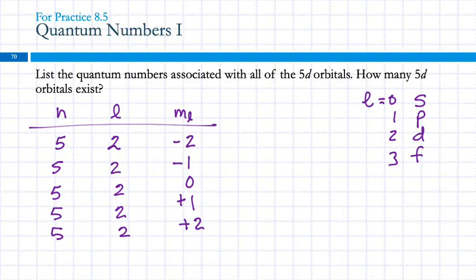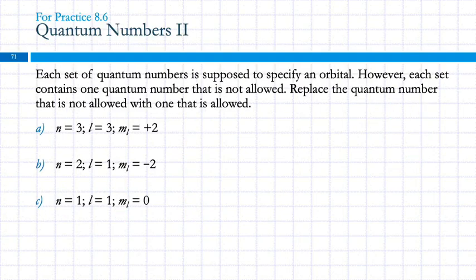Will we ever get a letter besides s, p, d, and f? Probably in theory — because if n can be any integer greater than 1, they exist. G would come after f, because then they went back to the alphabet. So we can just follow the alphabet.